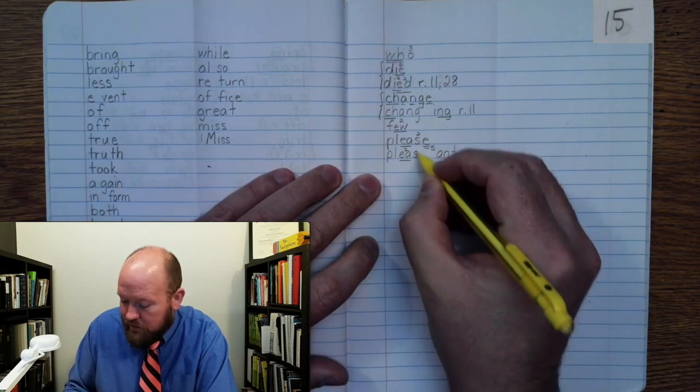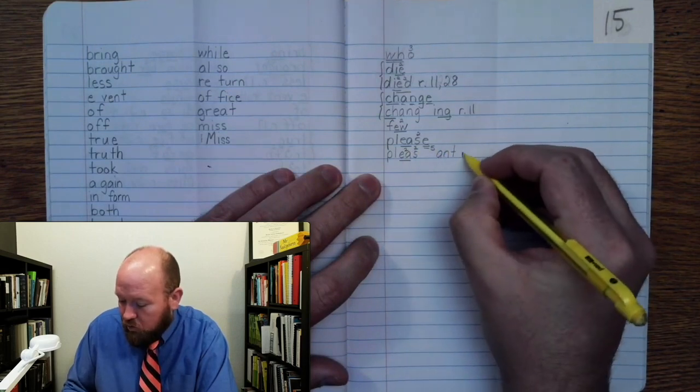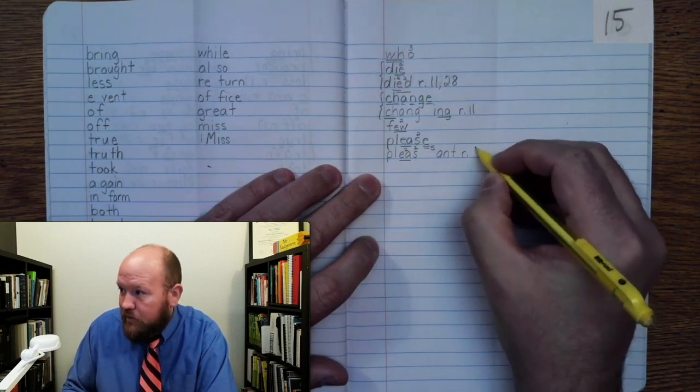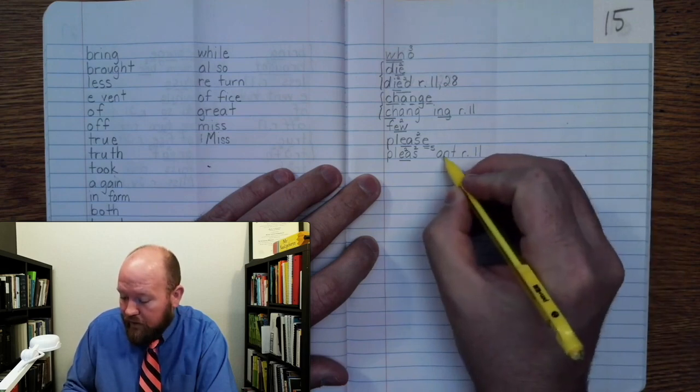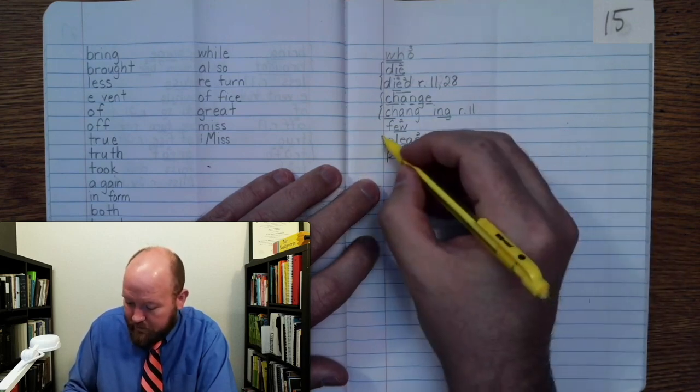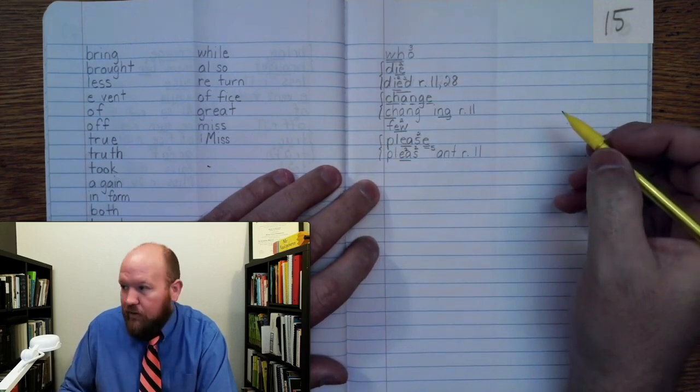Two, two, two, rule eleven. ANT. Pleasant.